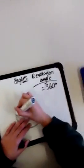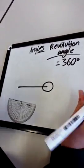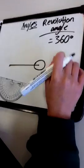The revolution angle is just like a lollipop like this. So when you think of a revolution angle, just think about lollipops and it's 360 degrees.